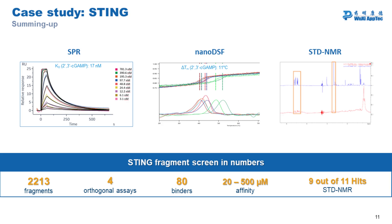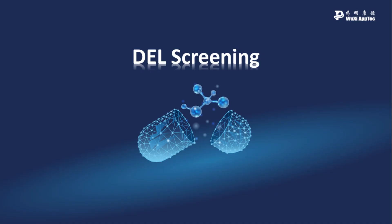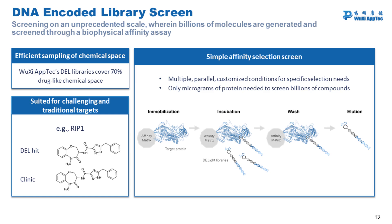This is a brief example of how one can tackle challenging targets such as STING. Another possible approach is DEL screening. DEL screening enables searching for binders to the target protein from a collection of several billions of compounds, which are pooled together in a single binding tube. This is screening on an unprecedented scale.